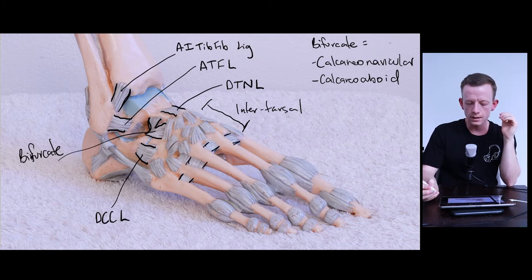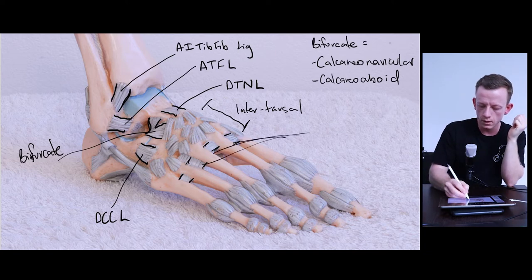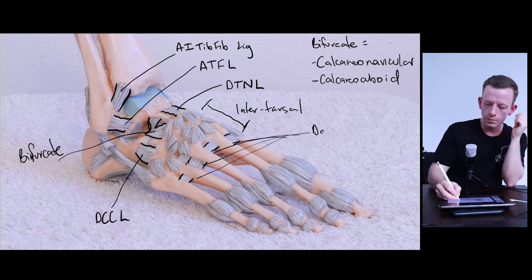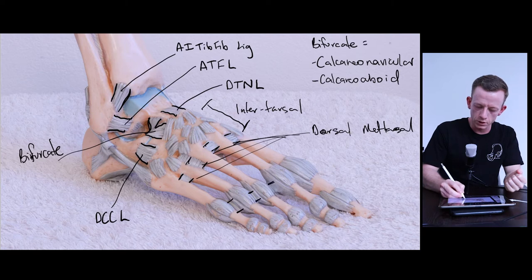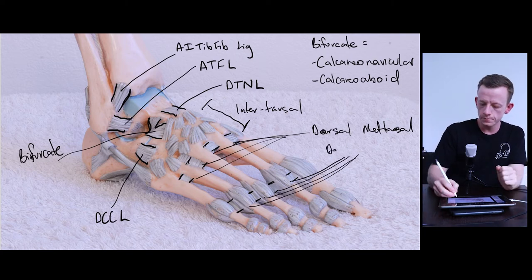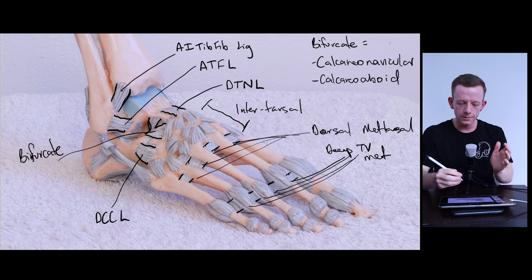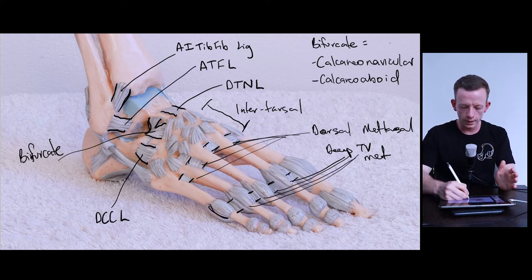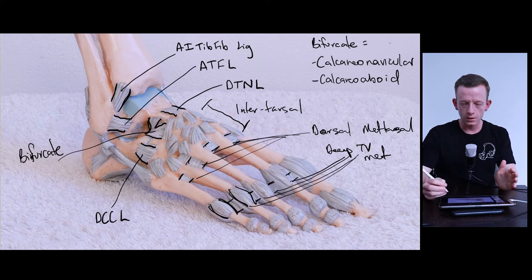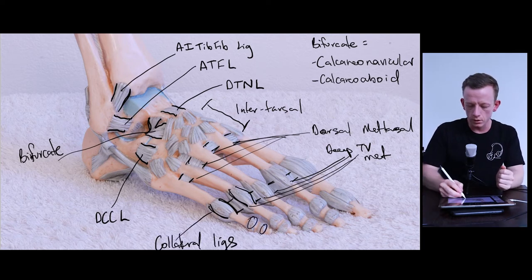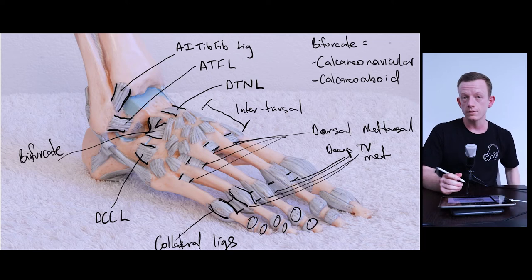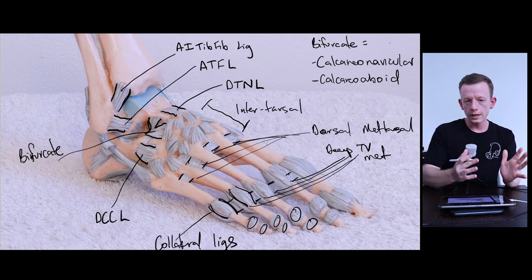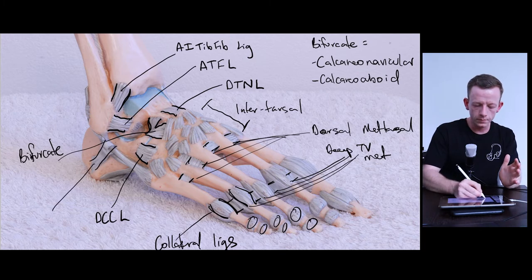Attaching the bases and start of the shaft of the metatarsals together, we have the dorsal metatarsal ligaments. At the metatarsophalangeal joints there's a ligament running in a similar direction called the deep transverse metatarsal ligament. On either side of those MTP joints we have the collateral ligaments, and everything else — these joint capsules — are the joint capsules of the interphalangeal joints.